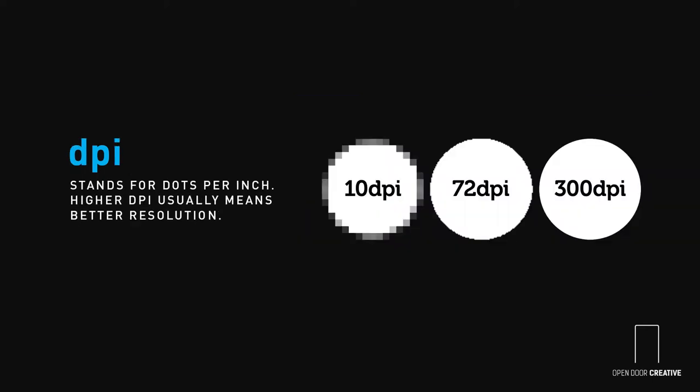DPI stands for dots per inch. The lower the DPI, the larger the dots; the higher the DPI, the smaller. A higher DPI equals a higher resolution. You typically want around 300 DPI for a printed piece and between 72 and 150 DPI for web and broadcast.